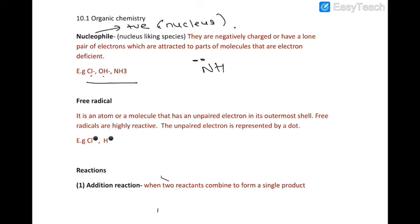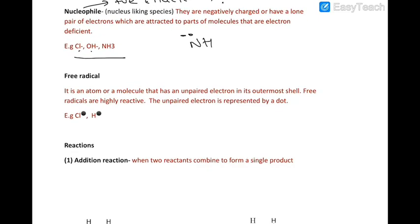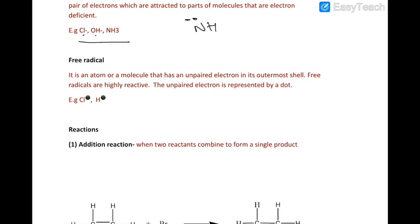Free radical is an atom or a molecule that has unpaired electron in its outermost shell. They are very reactive and these tend to react with substances to pair up this unpaired electron. And they are represented, that unpaired electron is represented by a dot. This is too big, actually it's represented like that. So Cl dot, H dot. So it's an unpaired electron.